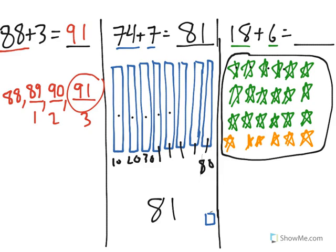1, 2, 3, 4, 5, 6, 7, 8, 9, 10, 11, 12, 13, 14, 15, 16, 17, 18, 19, 20, 21, 22, 23, 24. 18 plus 6 is 24.